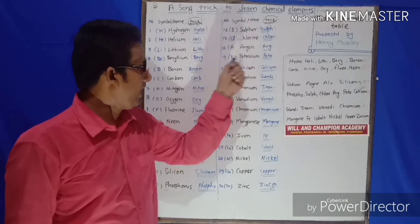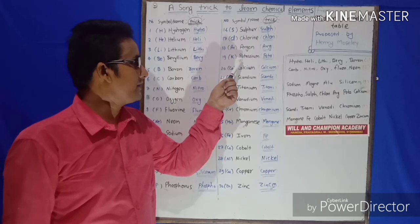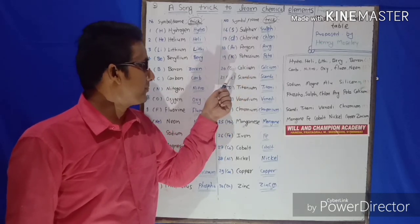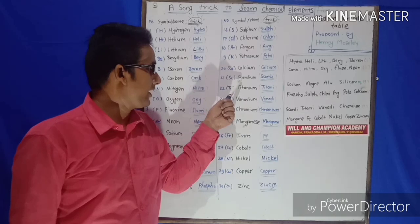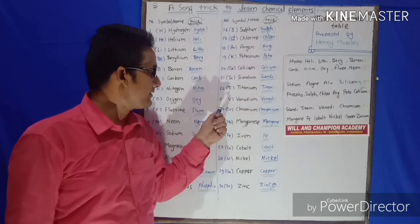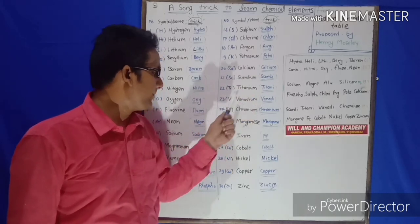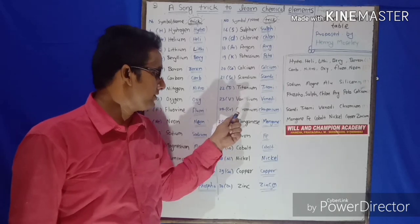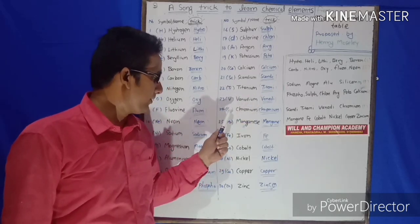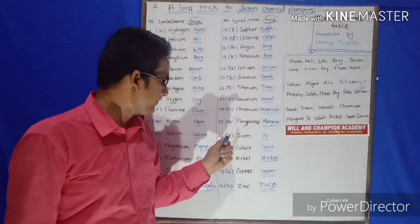K stands for Potassium, say Potate. Ca stands for Calcium, say Calcium. Sc stands for Scandium, say Scandi. Ti stands for Titanium, say Titani. V stands for Vanadium, say Vanadi. Cr stands for Chromium, say Chromi. Mn stands for Manganese, say Mangan.